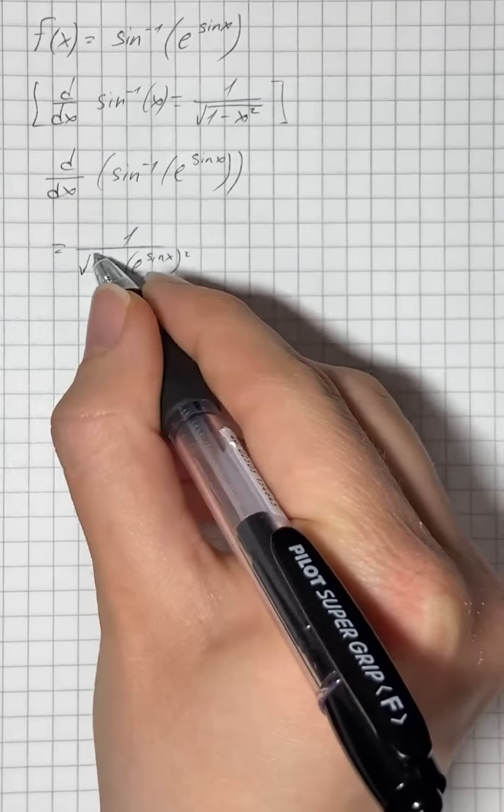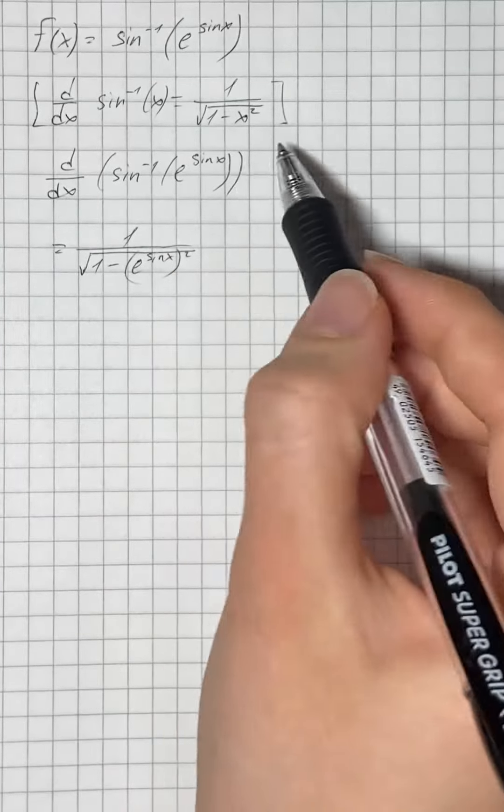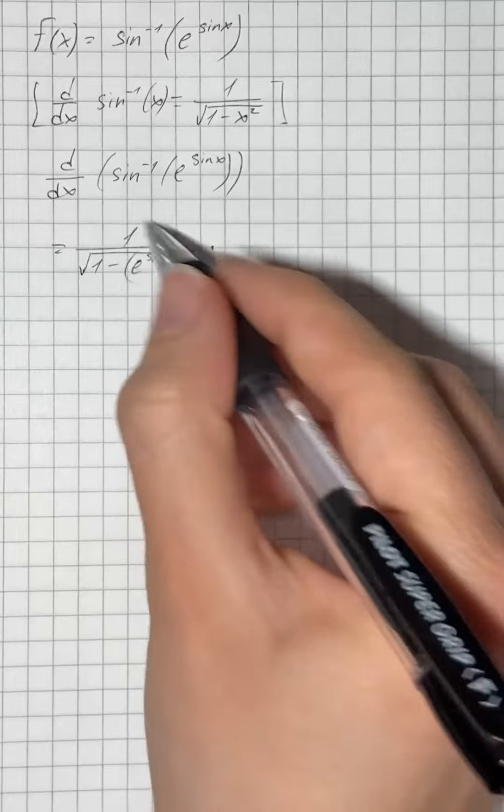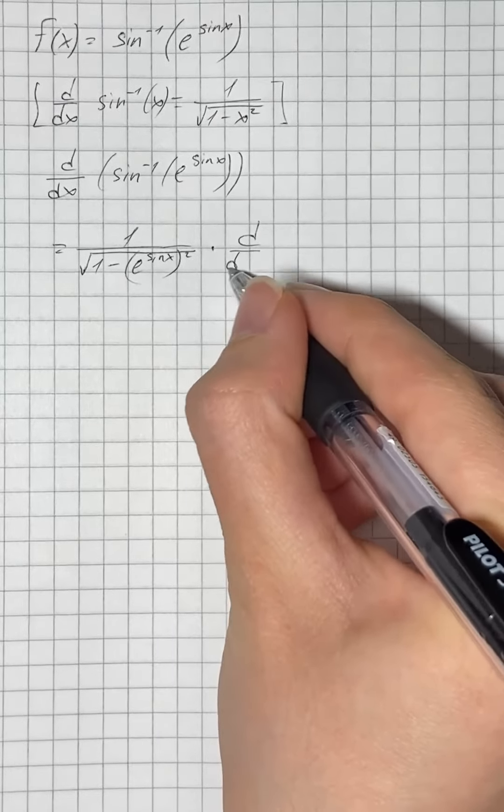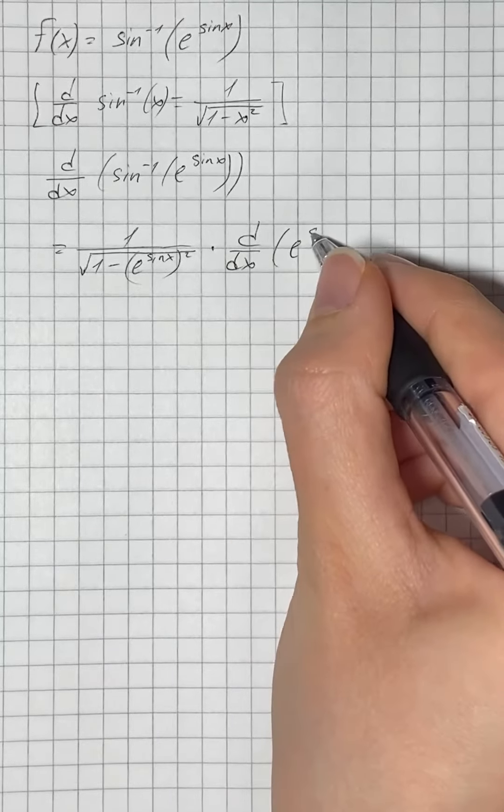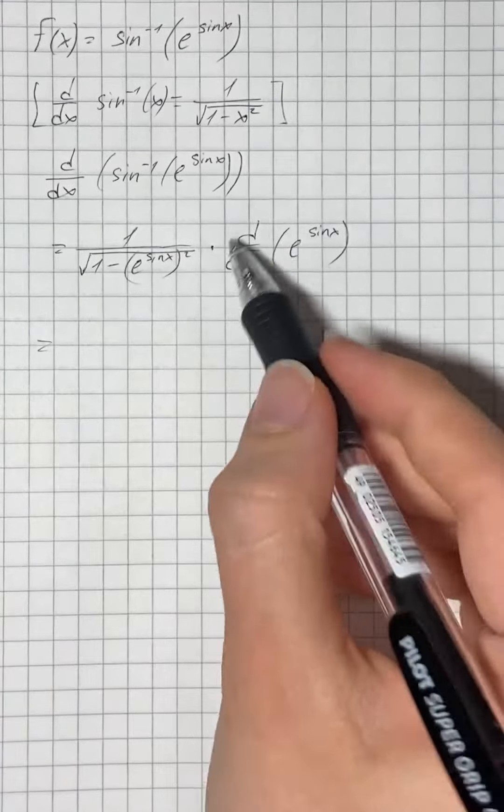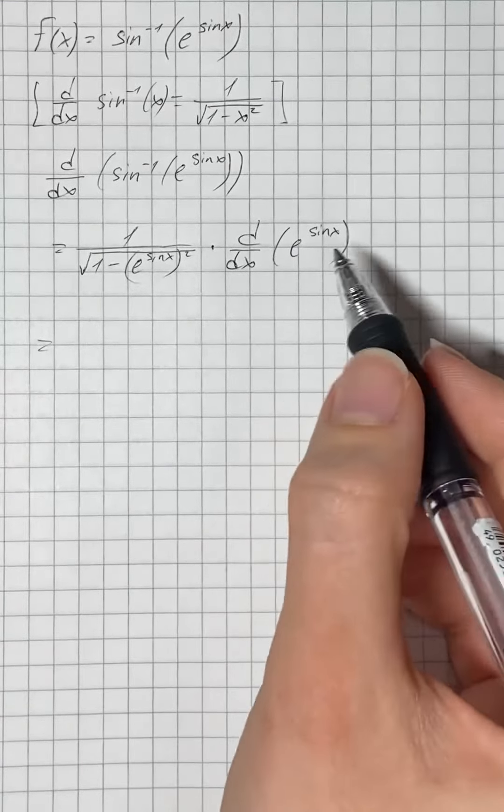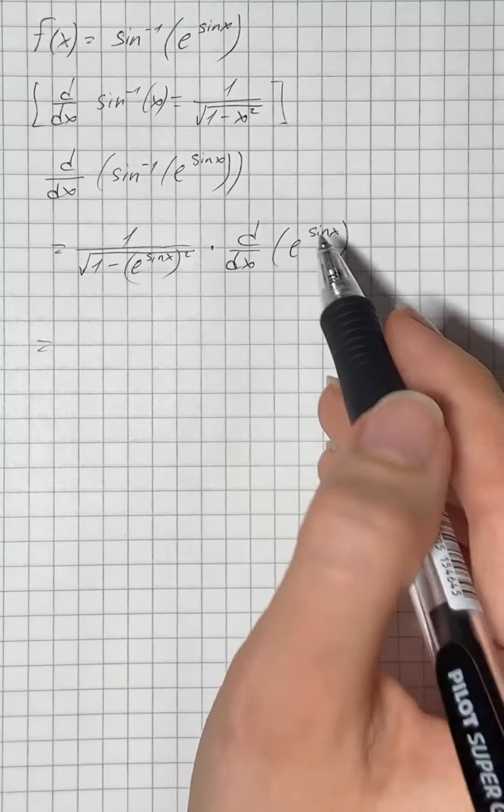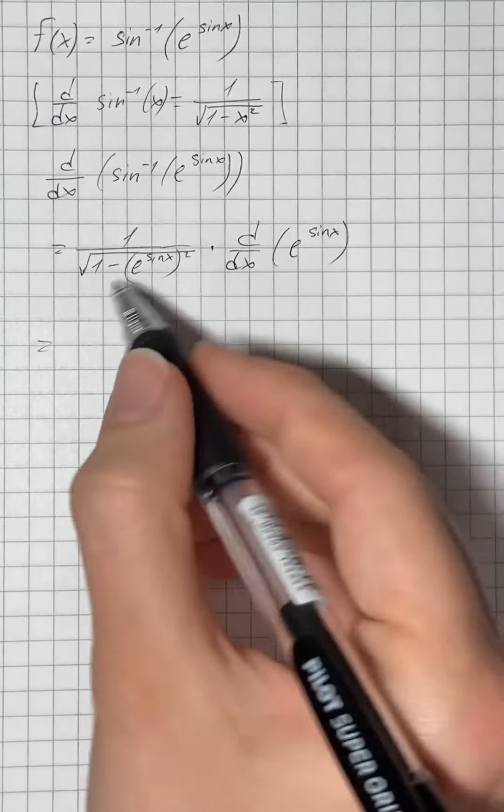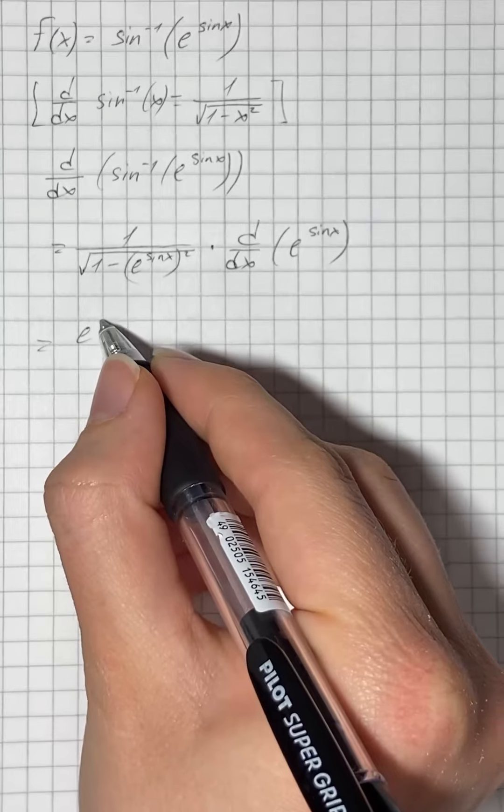Here we use the chain rule, so multiply by the derivative of e to the power of sine of x. We're going to use the chain rule again, so we take the derivative of the exponential function, which is the function itself.